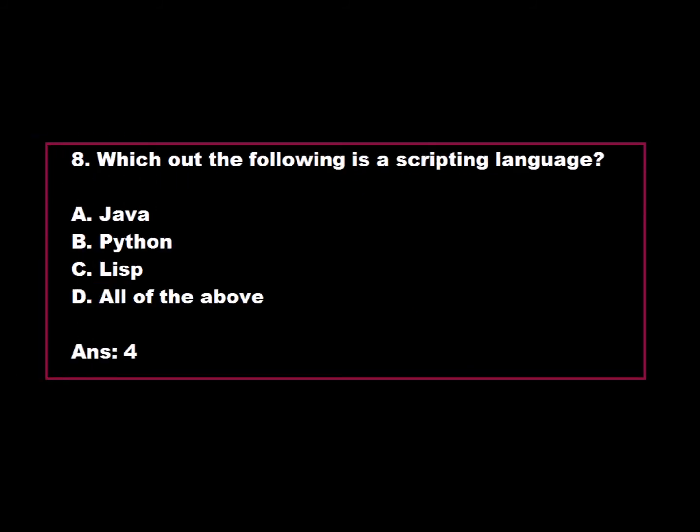Question 8: Which of the following is a scripting language? Option A: Java. Option B: Python. Option C: Lisp. Option D: All of the above. Java, Python, and Lisp are all scripting languages. Hence, Option D is correct.